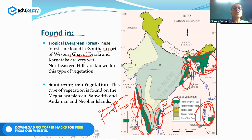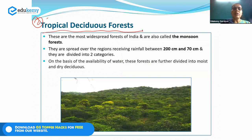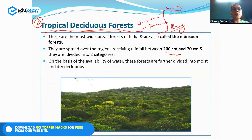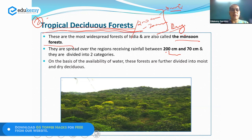The second category is tropical deciduous forests, found in areas with rainfall between 70 cm and 200 cm. They are categorized into moist deciduous and dry deciduous forests. Tropical deciduous forests are also called the monsoon forests of India, and they are found in more extensive areas compared to evergreen forests.